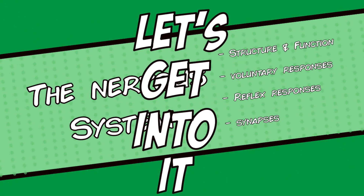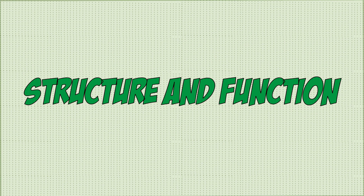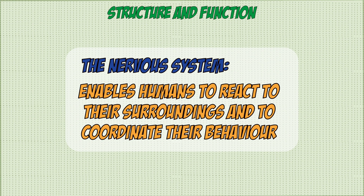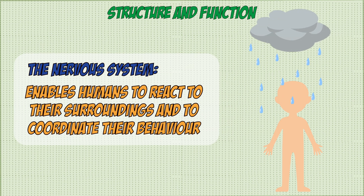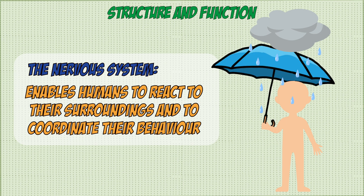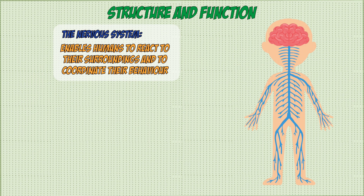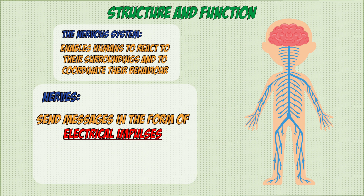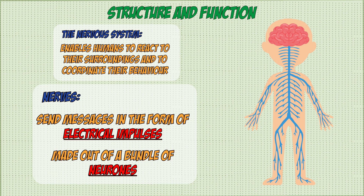Let's first talk about the function of the nervous system and its structure. The nervous system allows humans to react to their surroundings and coordinate their behavior — this basically means sensing changes in the environment and reacting to those changes. The structure of the nervous system consists of a huge network of nerves that span the entire human body. The job of the nerves is to send information around the body in the form of electrical impulses.